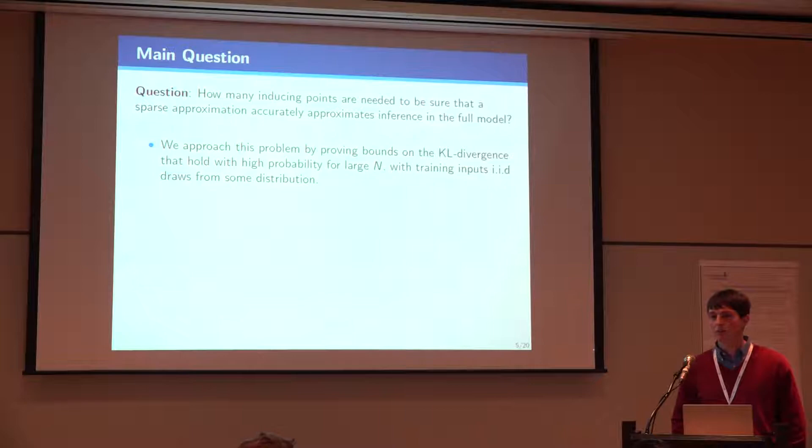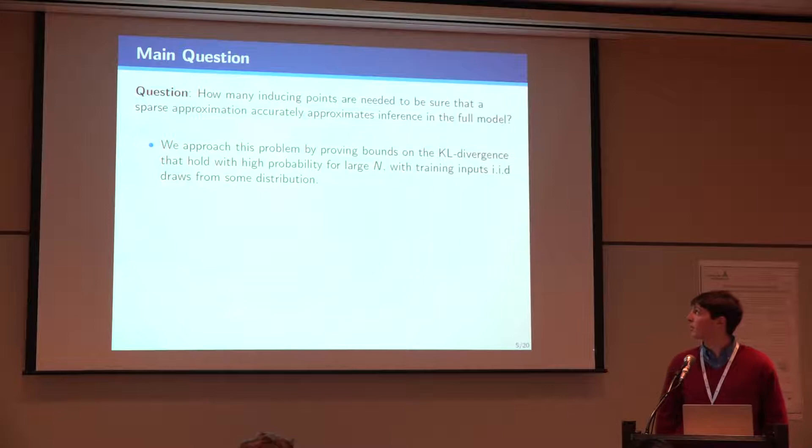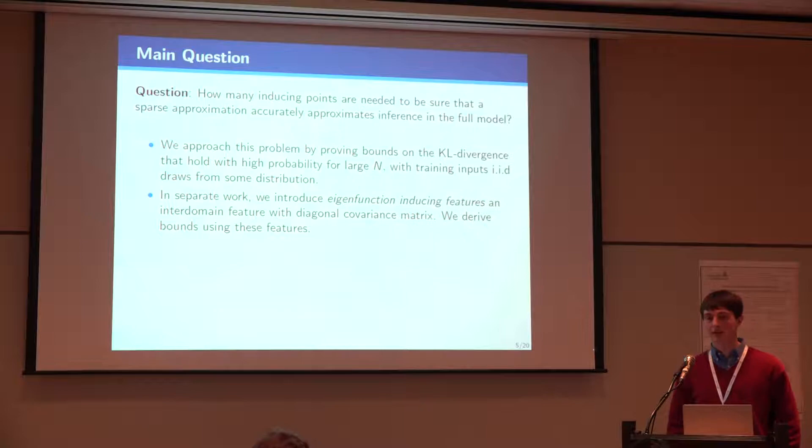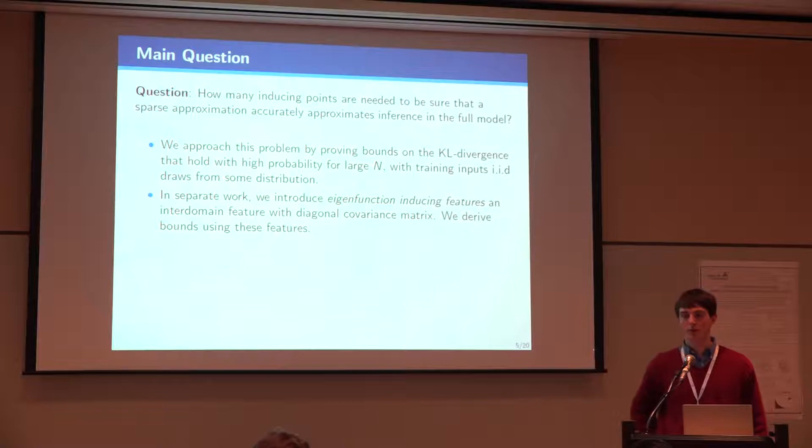We're going to approach what it means to have a good approximation by proving bounds on the KL divergence between the variational approximation and the true posterior. We'll prove bounds that hold with high probability for large N where we assume the training inputs, so these are the X variables from IID from some probability distribution.